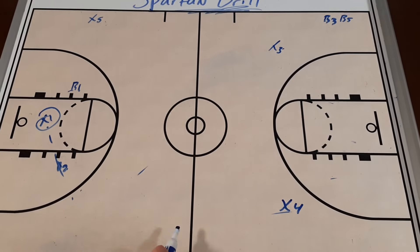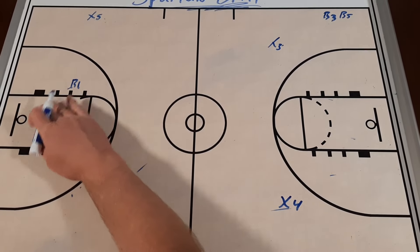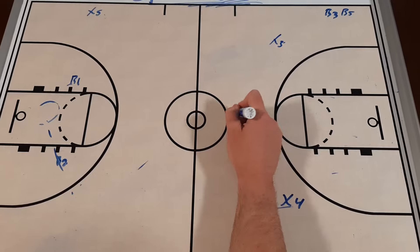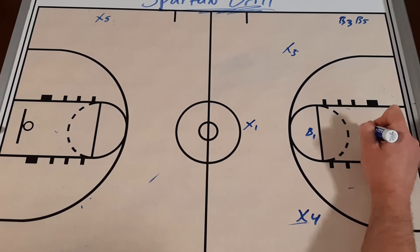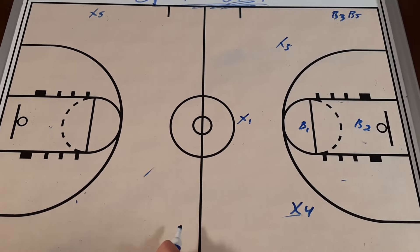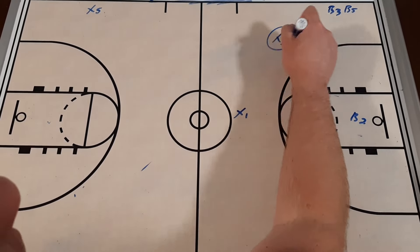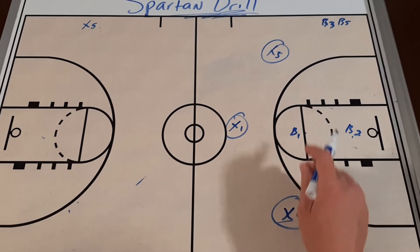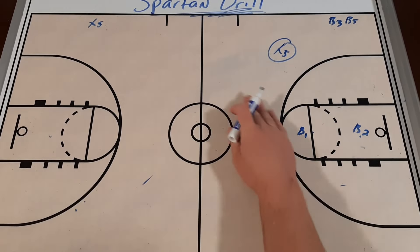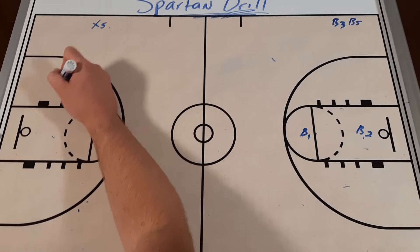So we would have our X4, we would have our X3 player here, we would have our X1 up here. And then our B1 and B2, if they were able to get back. And now it becomes 1, 2, 3 versus our two defenders.